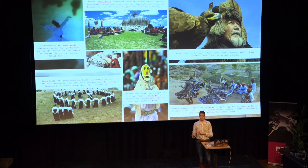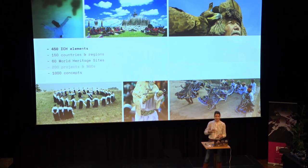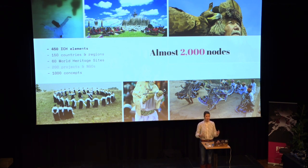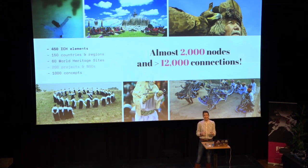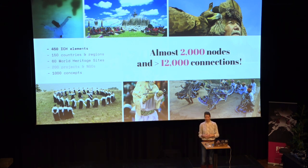He had convinced management to get some budget, hired someone from the back-end, and reached out to me for the visual side. He was very upfront in his first email about the scope of this network: at the time, there were about 415 cultural elements, some regions, countries, world heritage sites, NGOs, and about 1,000 different concepts — which combined to create 2,000 nodes. These 2,000 nodes between them shared a whopping 12,000 connections. I totally wasn't sure I would ever be able to untangle that mess — the Royal Constellations project had only 4,500 connections and that was already such a difficulty to tame.